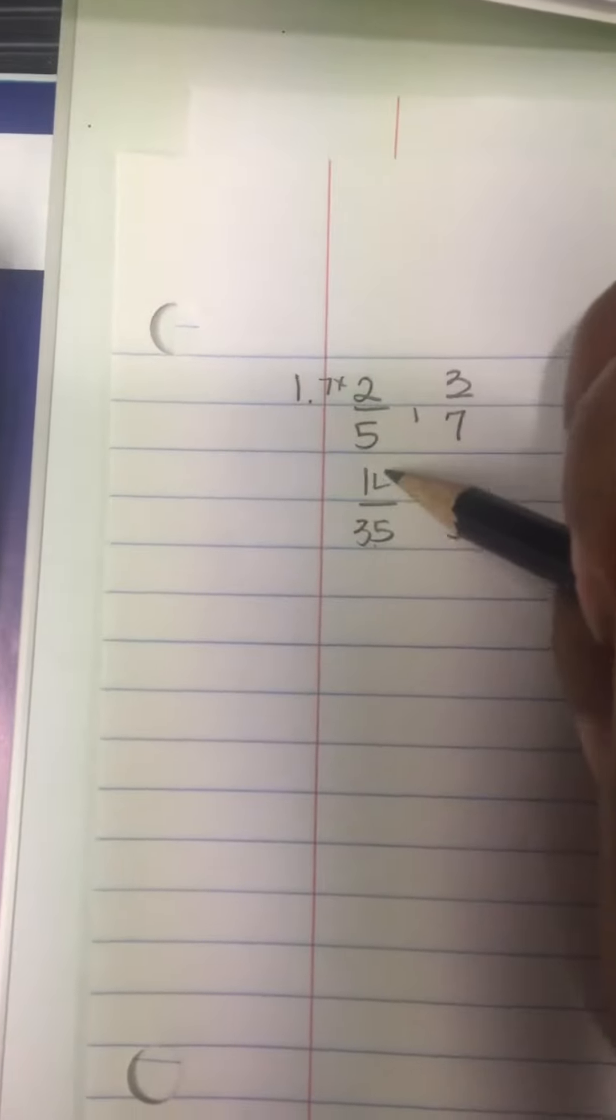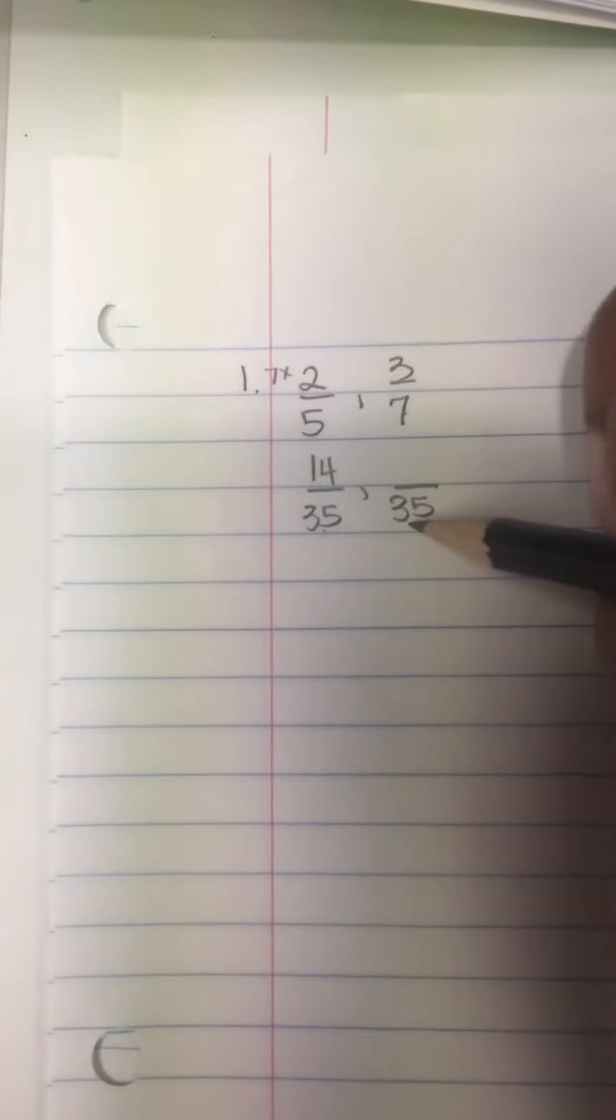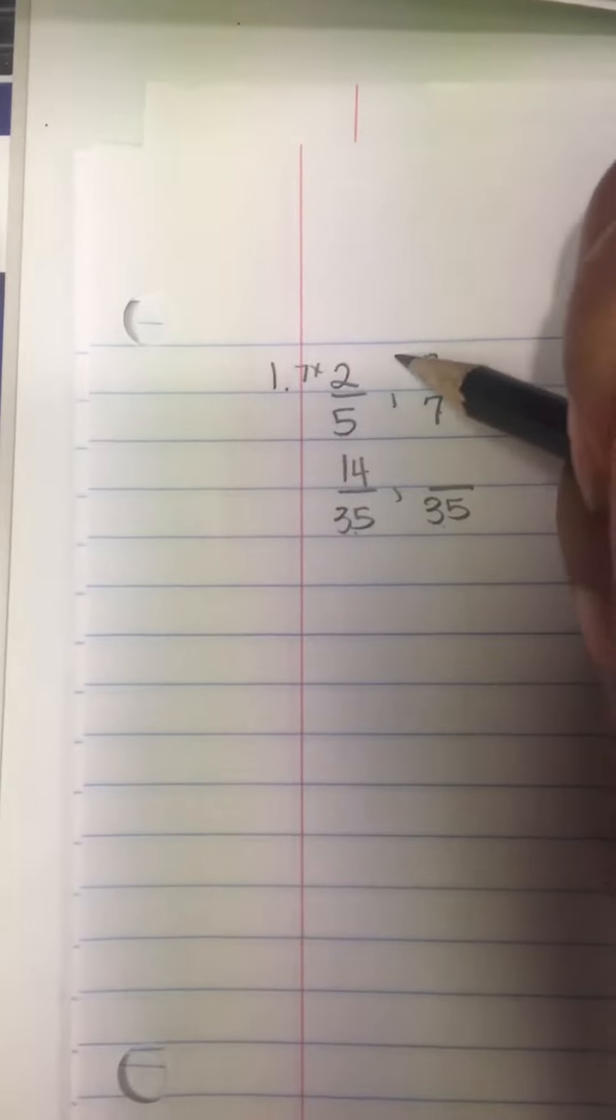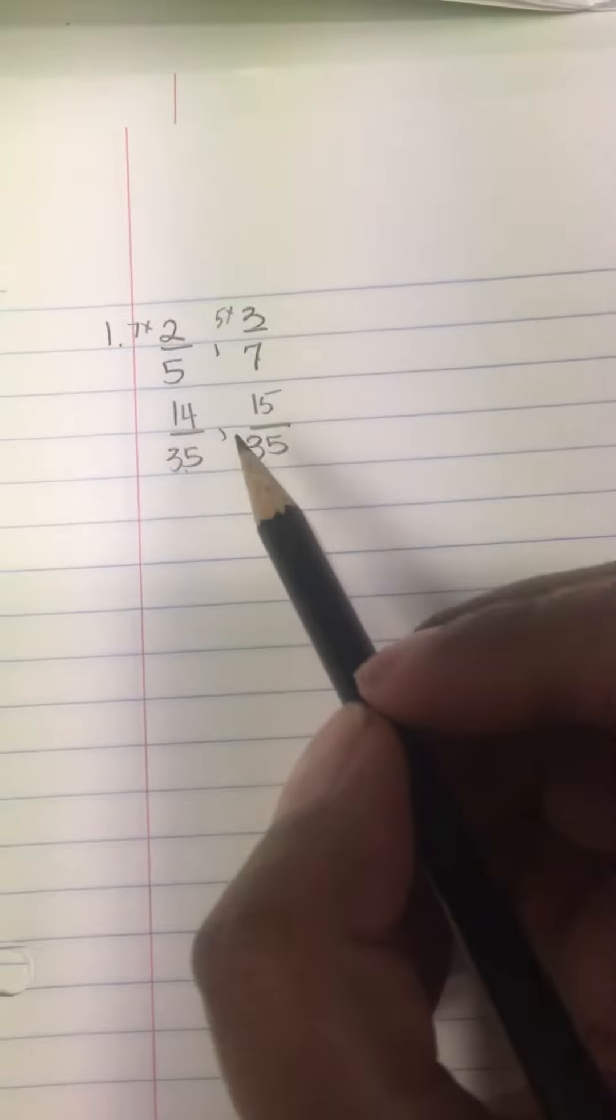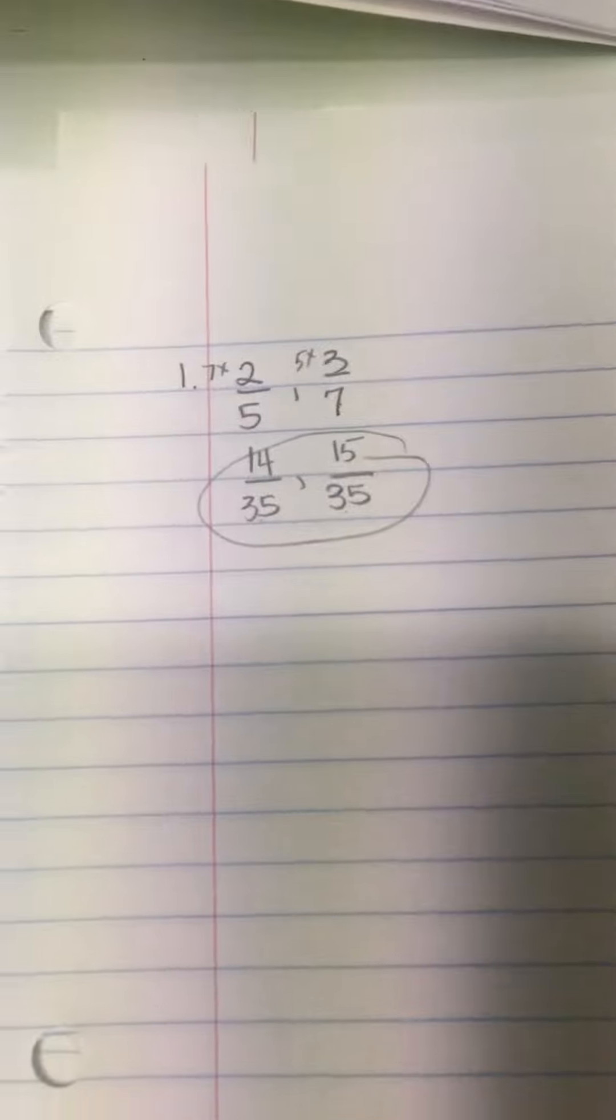Seven times two here is 14. Seven goes into 35 five times. Five times three is 15. These are called equivalent fractions, so this is your answer. Both of these are your answers.